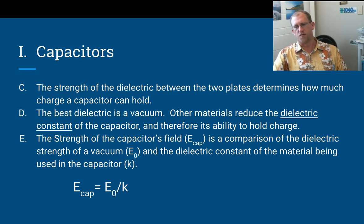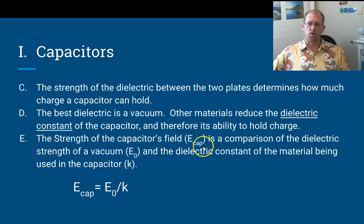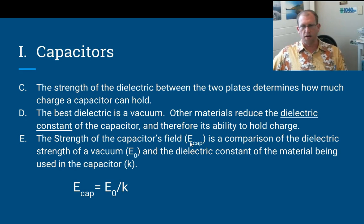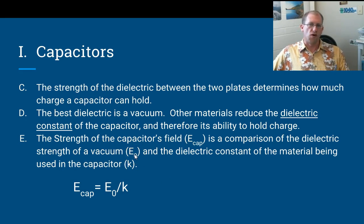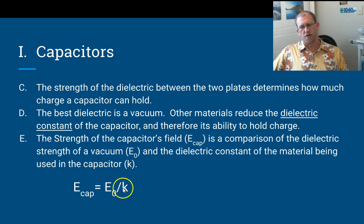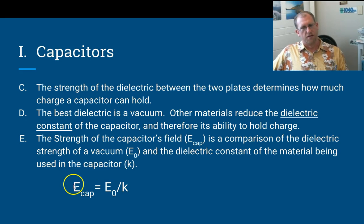The strength of the capacitor's field is measured with regard to how good it is at separating charge versus a vacuum. We use the term E for the field strength of the capacitor, which is a comparison of the strength of the vacuum — E-naught is the dielectric strength of a vacuum — compared to the dielectric constant K of the material actually being used in the capacitor, whether paper, plastic, glass, or something like that. This gives the relative field strength of your capacitor, and you will use this in some math this chapter.